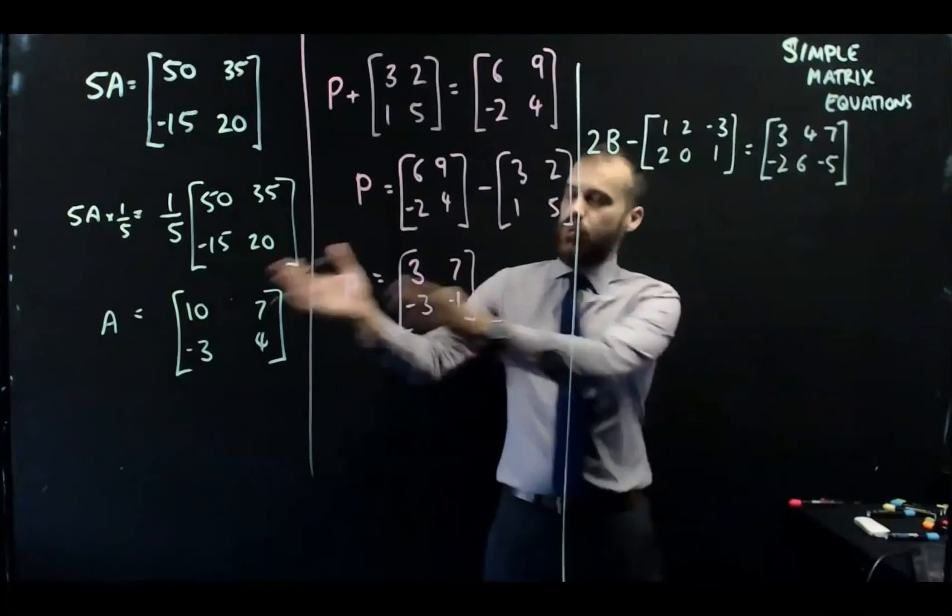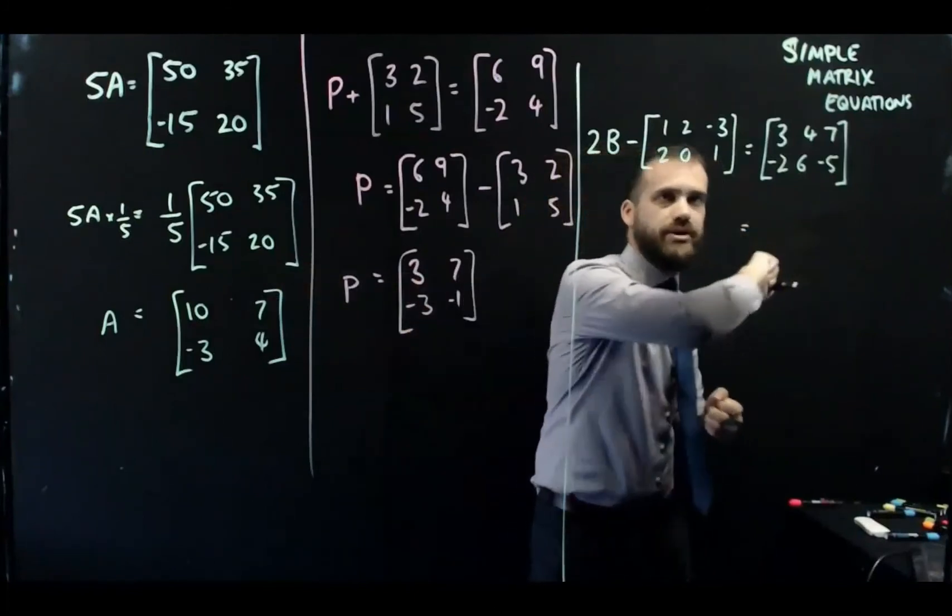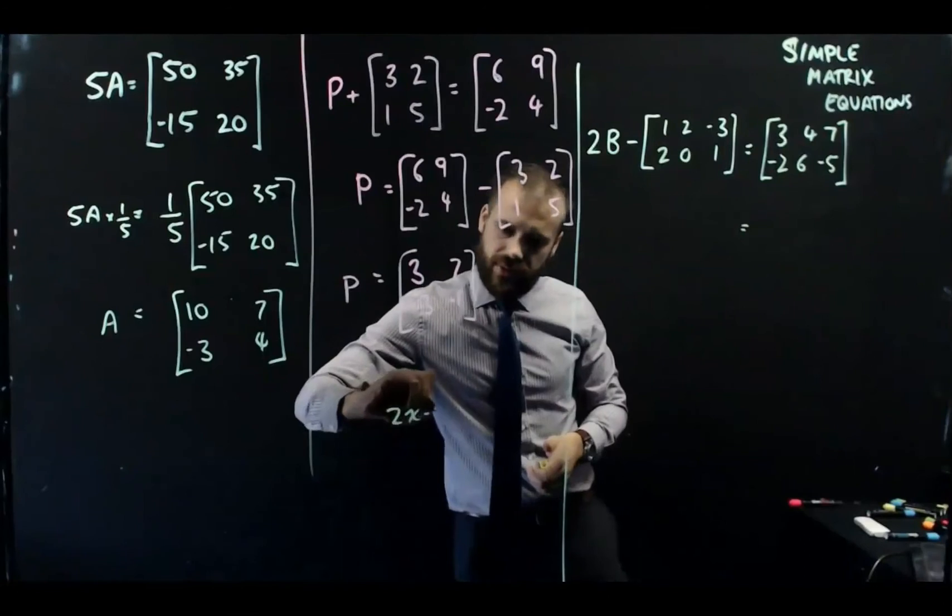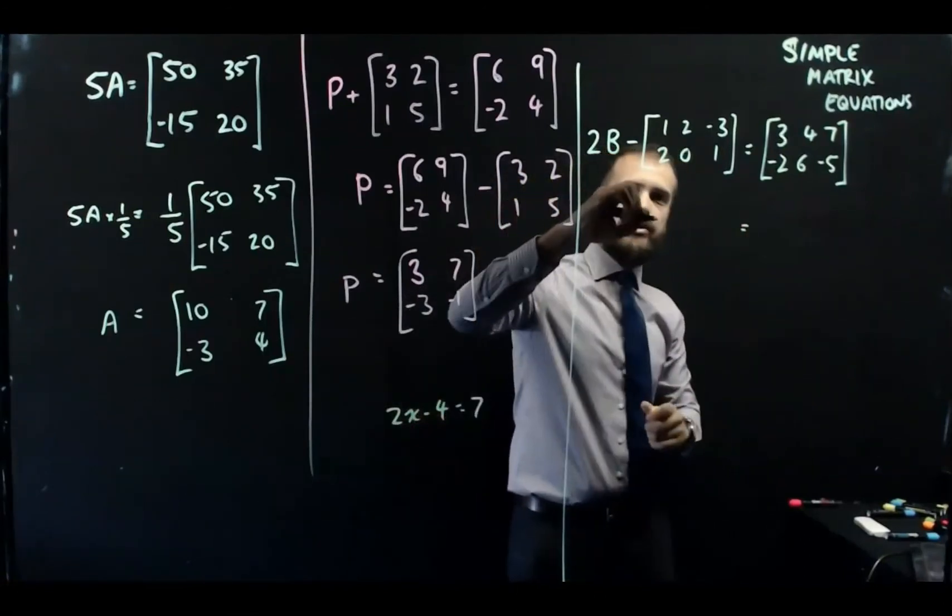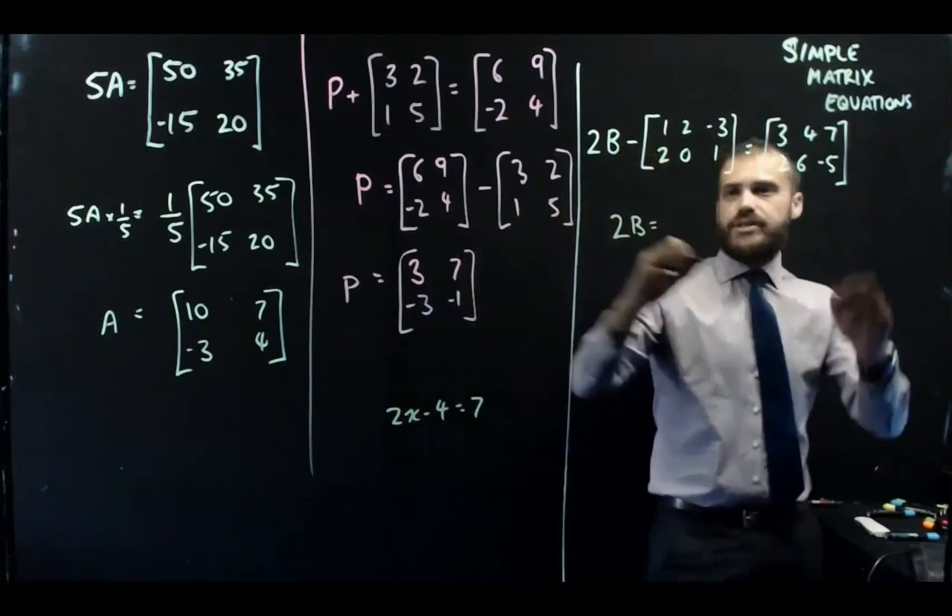Now, those are both one-step equations. Here's a two-step equation. 2B minus a matrix equals another matrix. We just need to do the same thing that we would do if they were numbers. So we need to add that matrix to both sides.